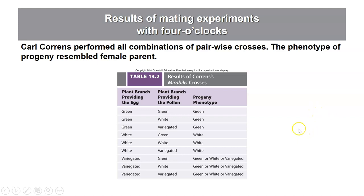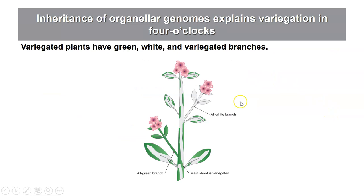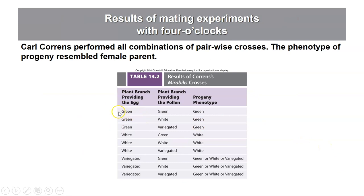Carl Correns did the following types of crosses in four o'clock plants. He took pollen from either green, white, or variegated stem flowers and pollinated ovules on all three possible types — green, white, or variegated. When he pollinated ovules on green stems with pollen from green, white, or variegated plants, all of the offspring that grew were green plants. This is maternal inheritance: crossing a green-stem ovule with pollen from a white plant still produces green offspring.